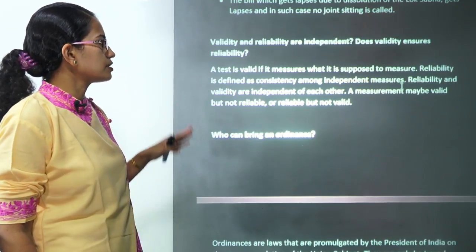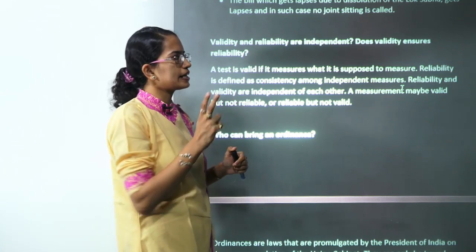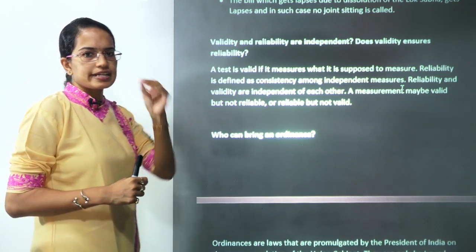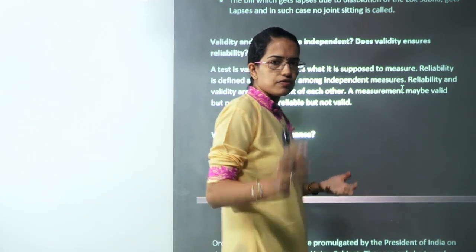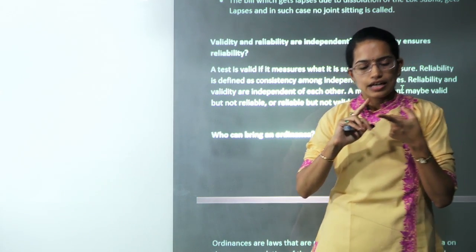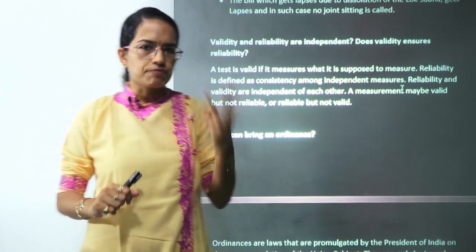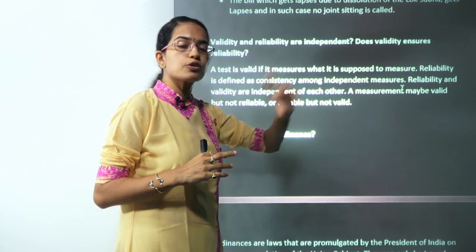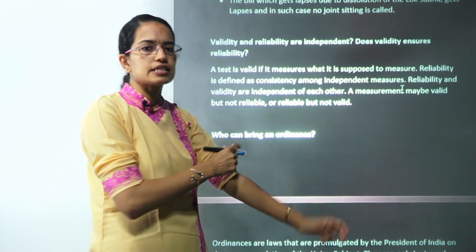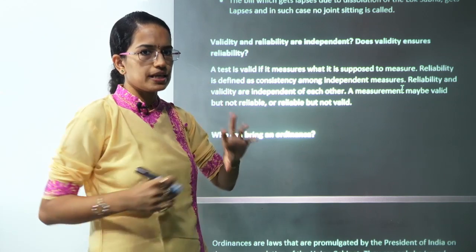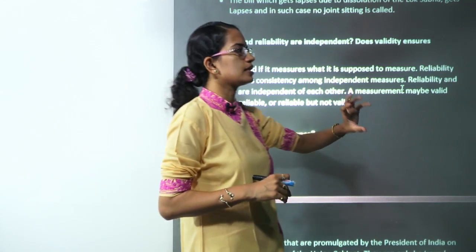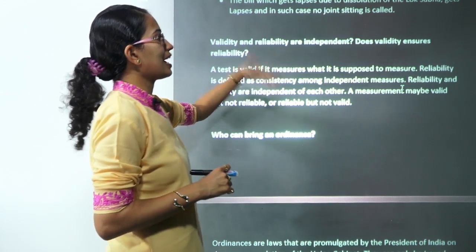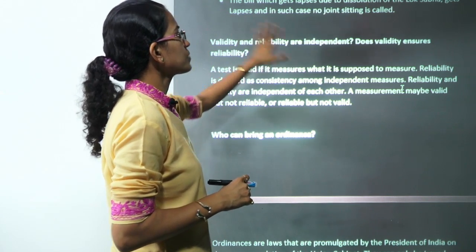Validity and reliability are independent. Does validity ensure reliability? Validity means measuring what you are supposed to measure. Reliability means that if you do a similar test at two different times, you get more or less similar results. A valid result might not be reliable, and a reliable result might not be valid. So they are independent. Refer to the separate classes on validity, reliability, and standardization of the test for more detail.